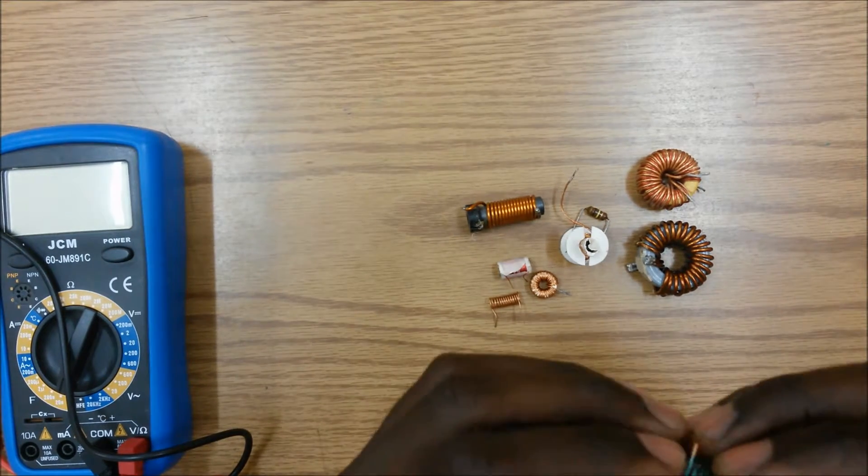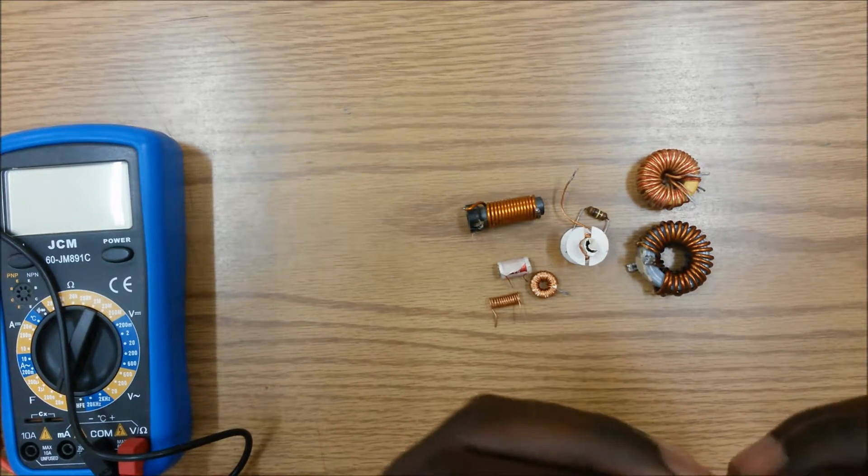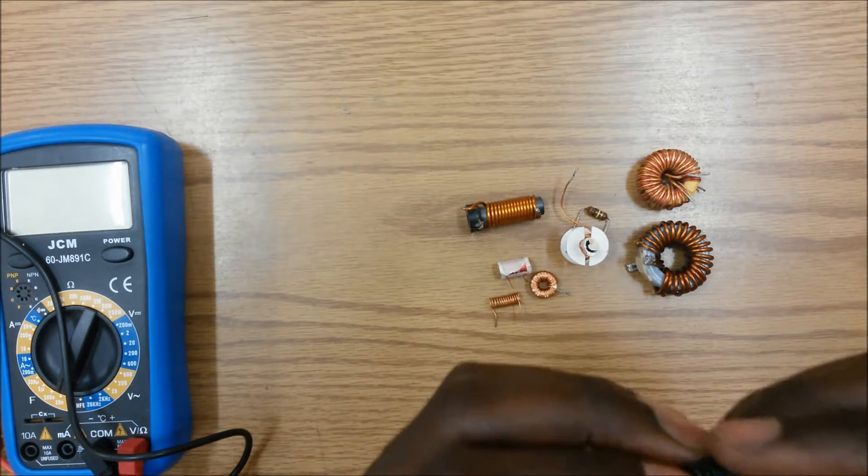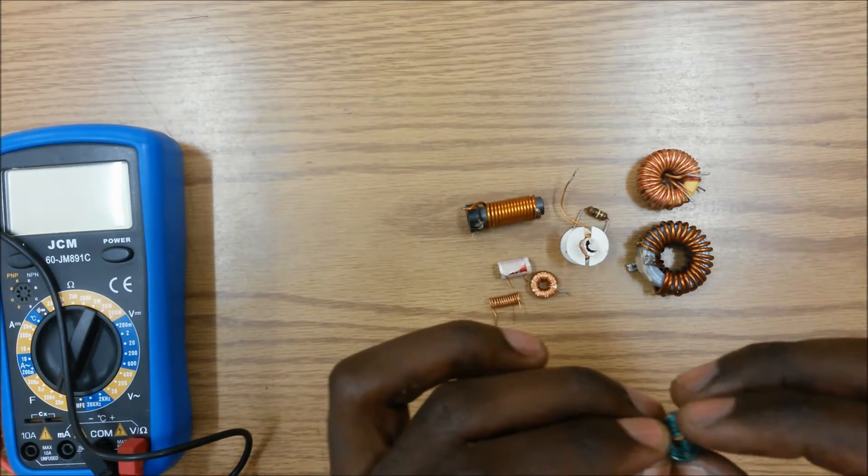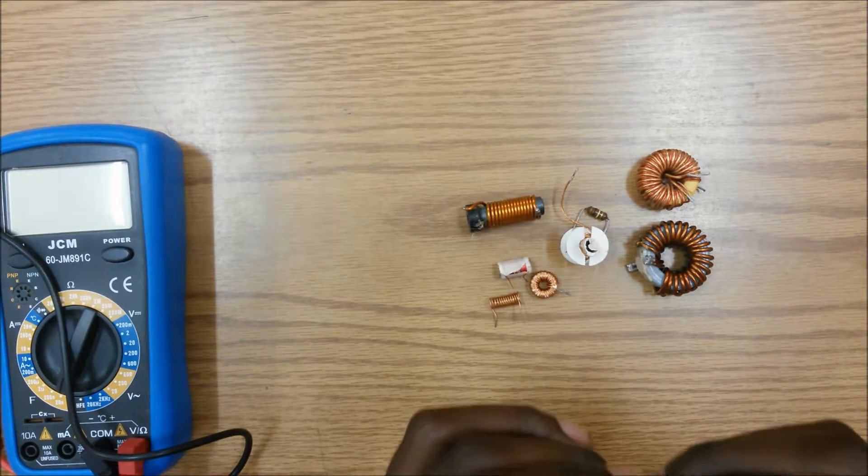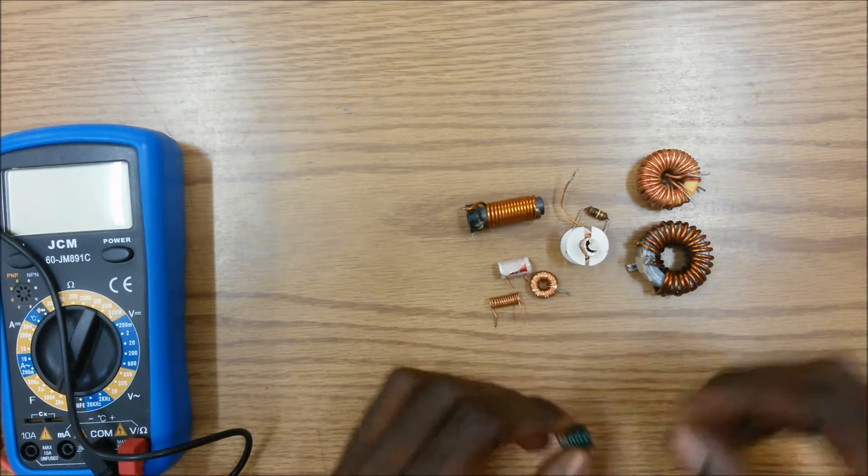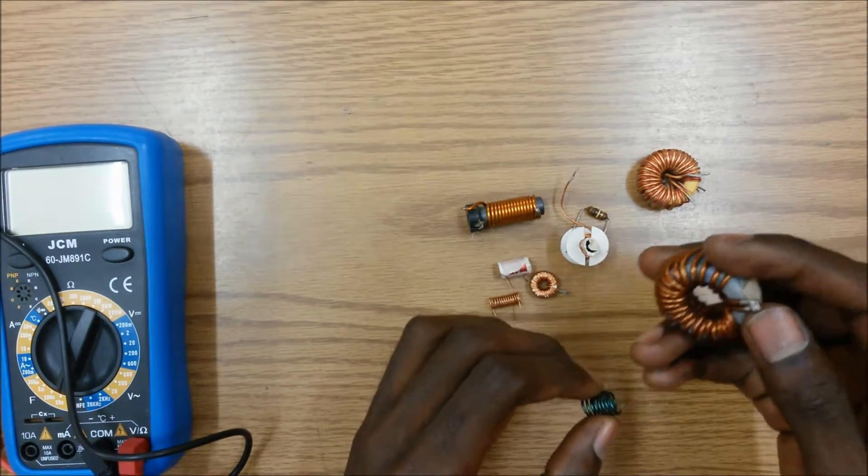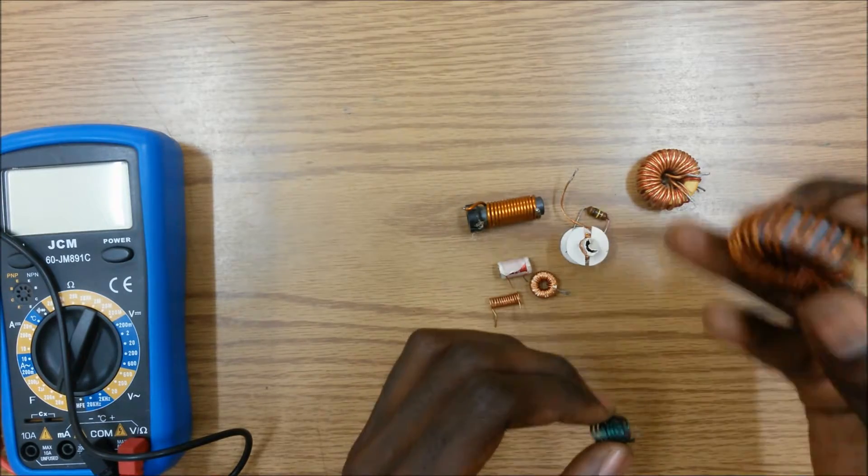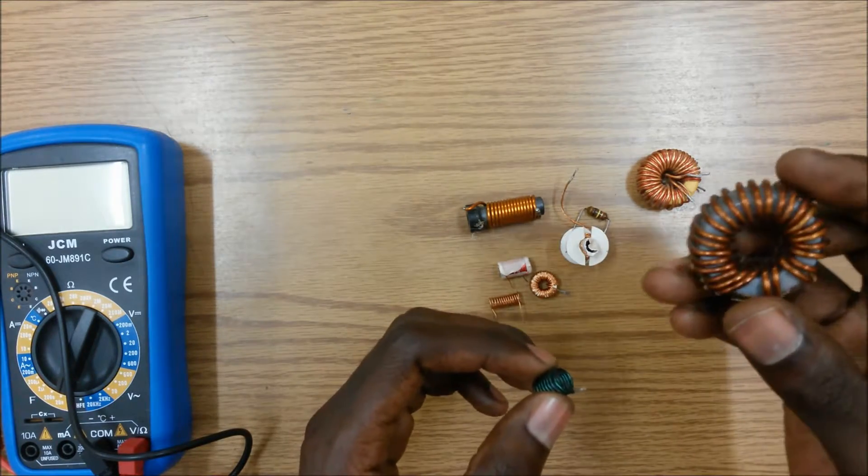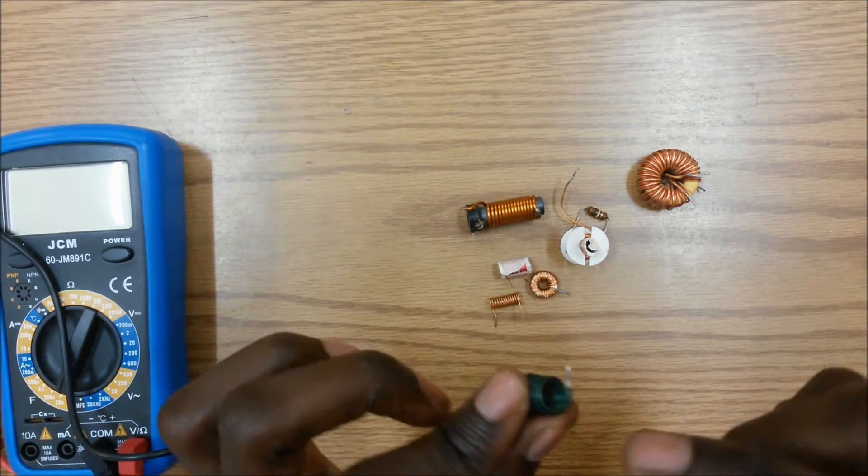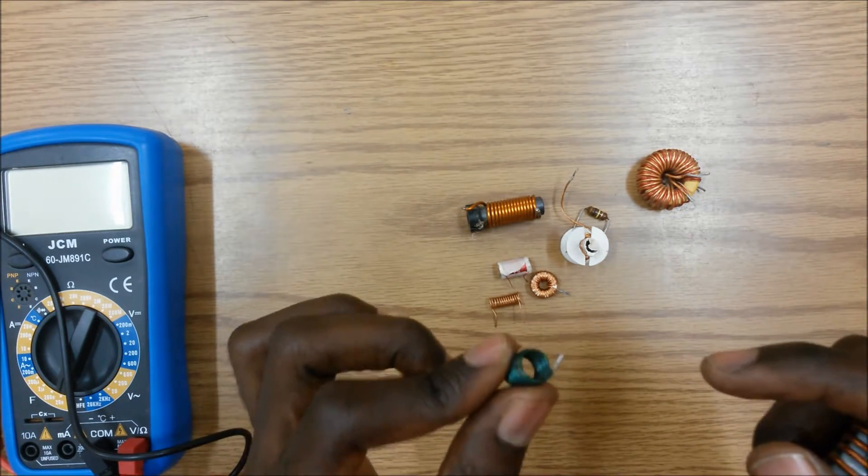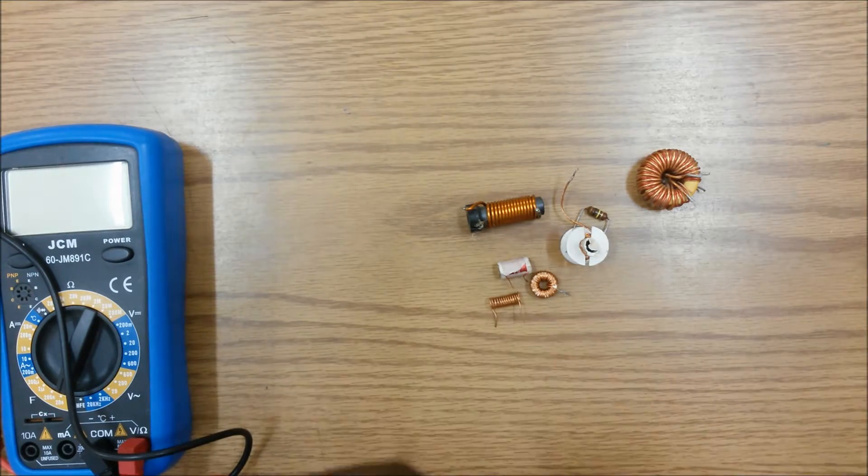Two things - the number of turns as well as the diameter of the conductor - will indicate the strength of that inductor, as well as the type of material which is used as the core. So this inductor here will have a much stronger inductance as opposed to this one which has air as its core.